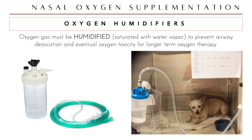For nasal oxygen and oxygen cages, the delivered oxygen must be humidified. Pure dry oxygen gas contacting the nasal mucous membranes can desiccate the airway and predisposes the animal to oxygen toxicity. Humidification is achieved by routing the oxygen tubing from the tank through a container of distilled water before it reaches the patient.